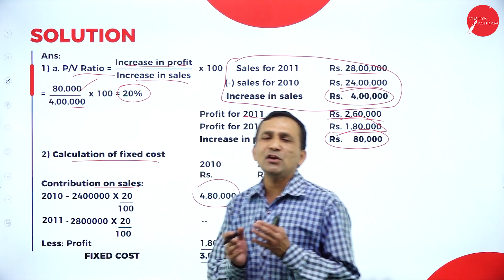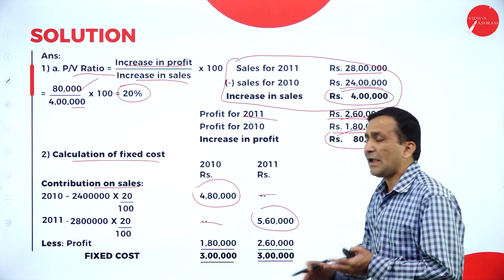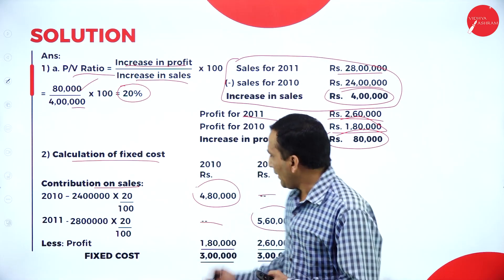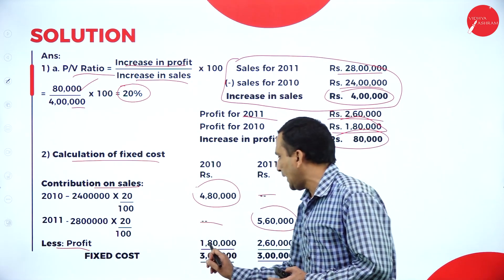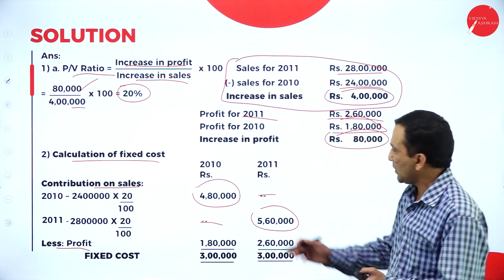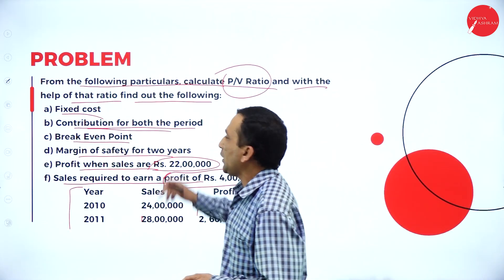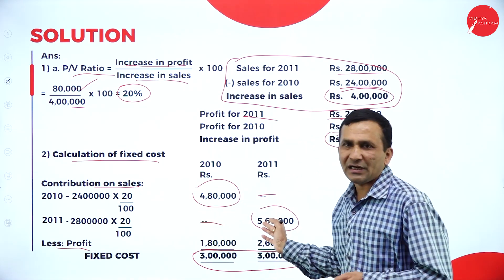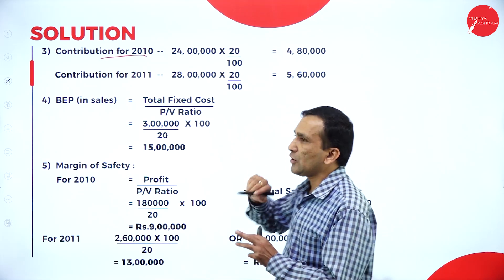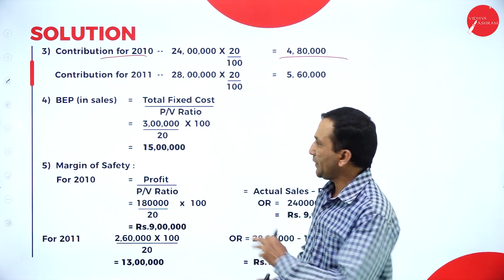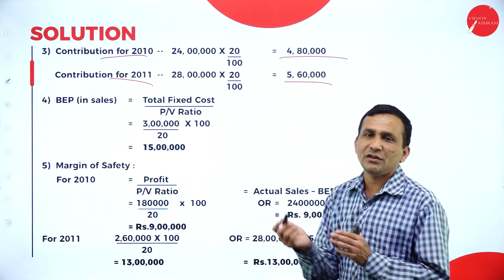For 2011, sales value is 28 lakhs multiplied by PV ratio 20%, giving contribution of 5,60,000, written in the 2011 column. From each year's contribution, we subtract the respective profit: 2010 profit is 1,80,000 and 2011 profit is 2,60,000. Subtracting gives us the same fixed cost for both years — confirming fixed cost is 3 lakhs.